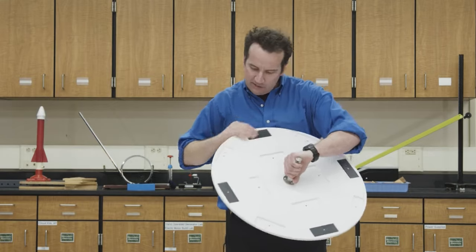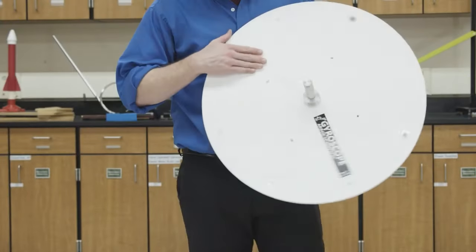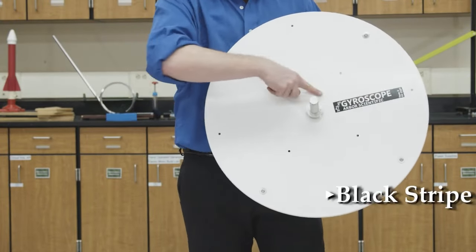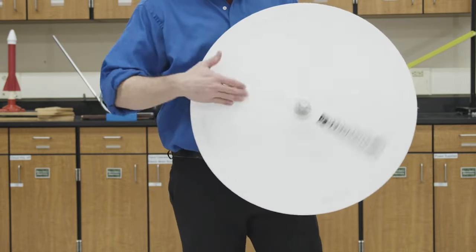Also, these weights on the back are flush and fit snugly in during rotation. They don't stick out. Also, the black stripe here allows you to measure the rate of rotation in case you want to do a quantitative experiment on precession.